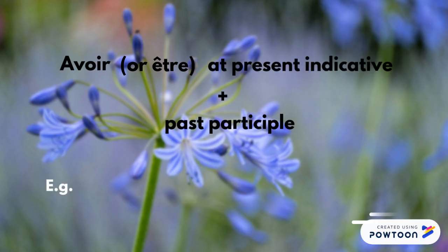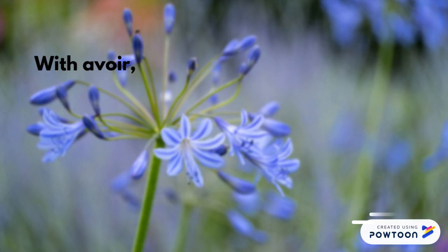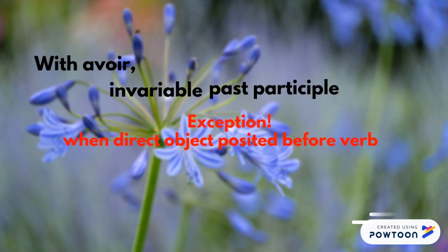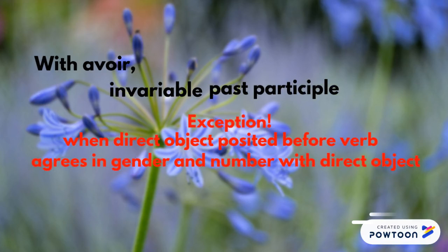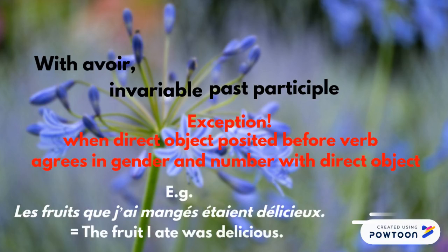For instance, j'ai mangé des fruits — I ate some fruit. With avoir, the past participle is invariable except when the direct object is placed before the verb; the past participle then agrees in gender and number with the direct object. For example, les fruits que j'ai mangés étaient délicieux — the fruit I ate was delicious.